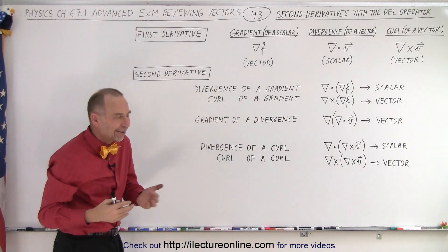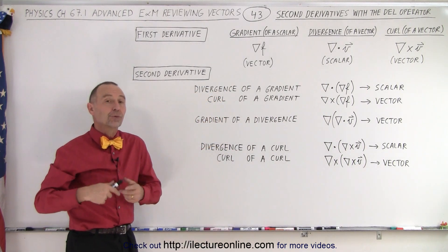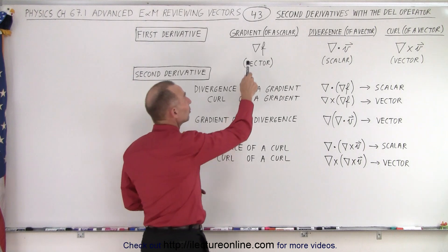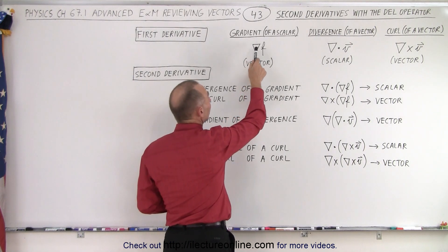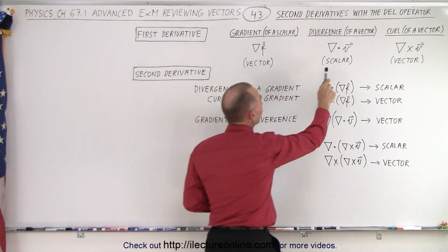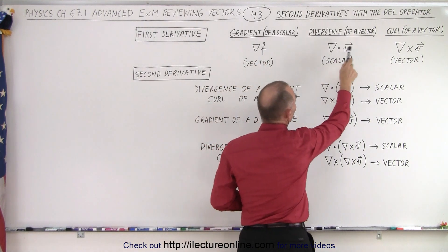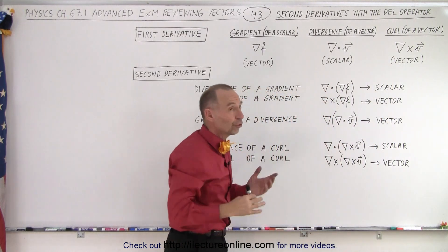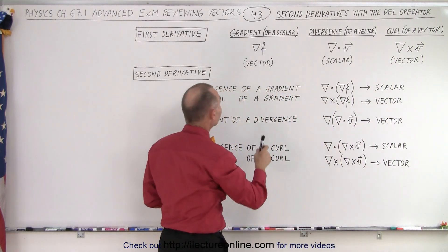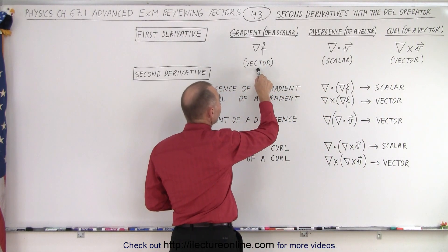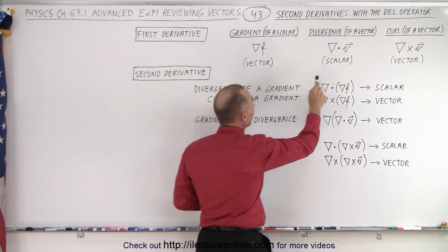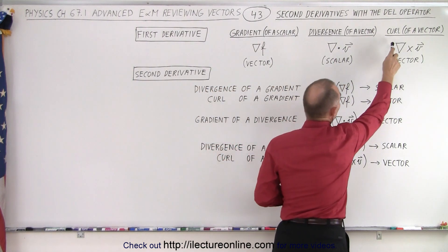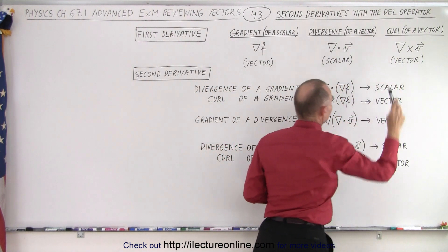In a way you can think of them as taking the first derivative. Notice that the gradient can only be done on a scalar quantity, and the divergence and the curl can only be done on a vector quantity. But the result of taking the gradient is a vector quantity, taking the divergence gives you a scalar quantity, and taking the curl gives you a vector quantity.